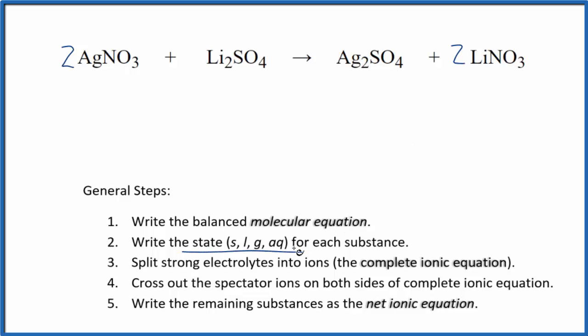Now we need to write the state for each substance. If you know your solubility rules, nitrates are very soluble - aq, it'll dissolve and dissociate into its ions. In general, with a few exceptions, sulfates are also very soluble. Lithium sulfate is soluble. One of the exceptions are silver compounds. Silver sulfate is insoluble. It's a good one to remember.